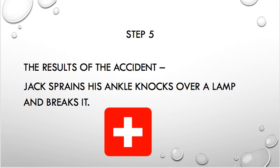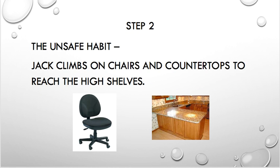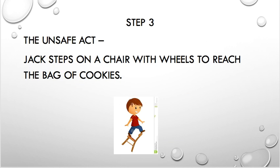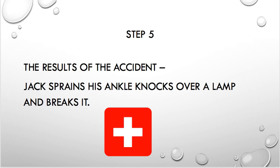Let's review again the different steps in the accident chain — you might want to write these down. Starting from the beginning: the situation, the unsafe habit, the unsafe act, the accident, and the results of the accident. I hope these ideas help you keep in mind how to act more safely. This ends our talk about the accident chain. Thanks.